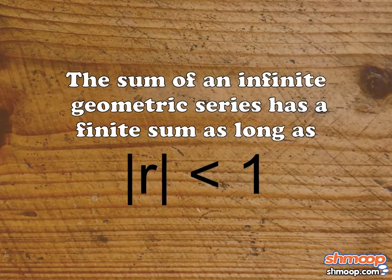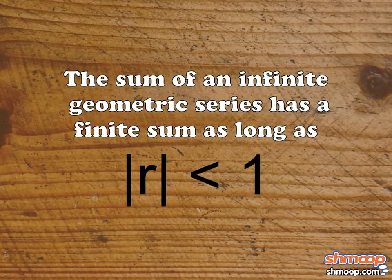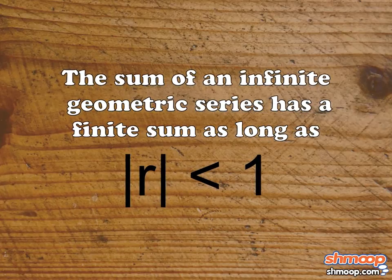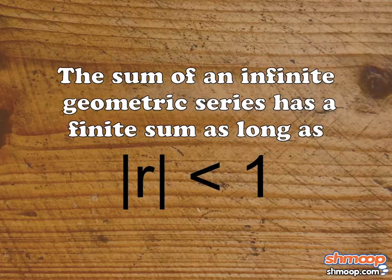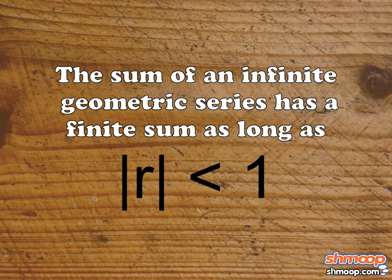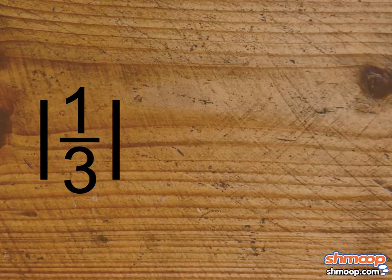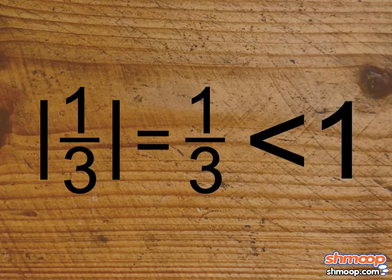No worries, Pepe. The sum of an infinite geometric series has a finite sum as long as the absolute value of the common ratio is less than one. Think about that. In this case, the absolute value of one-third is one-third, which is less than one.